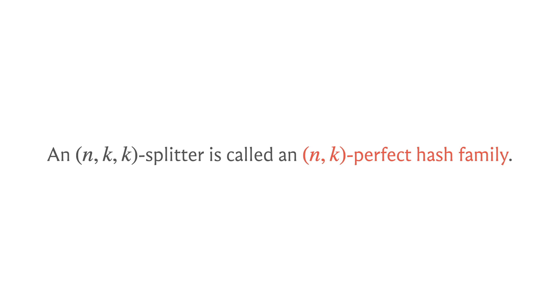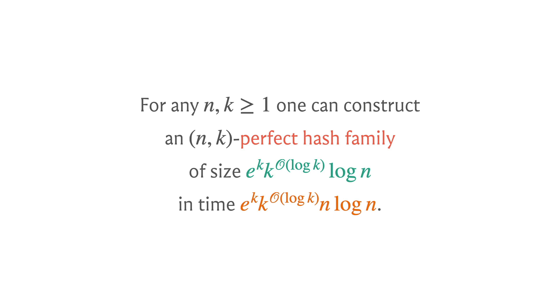So if you were to compose these functions, then you will end up with functions that map 1 to n to 1 to k, and it's just useful to do it in these two steps. Now I will not be getting into the details of how this composition is done, but I will state the result for you. So what you get once you go through this process is an (n,k)-perfect hash family of size e^k · k^O(log k) · log n.